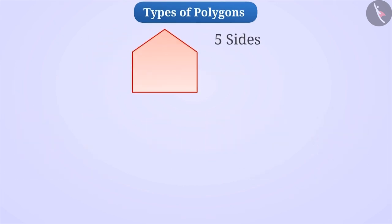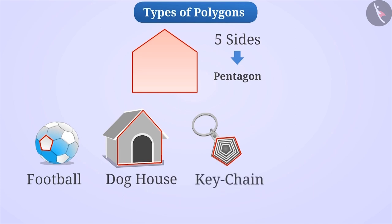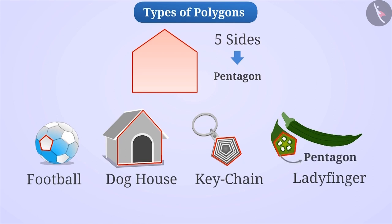A polygon with five sides is called a pentagon. We can see this shape on football, dog houses, keychain, etc. If you have ever seen the part of a lady finger once it's cut, then you know what a pentagon looks like.